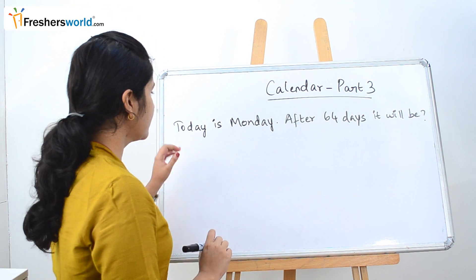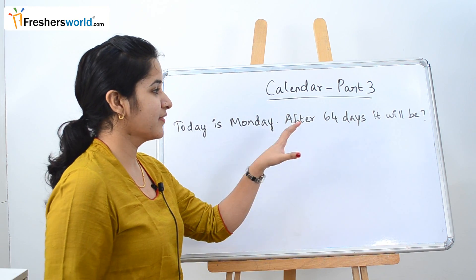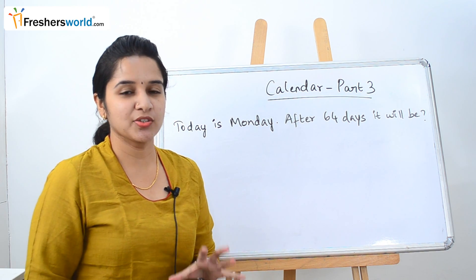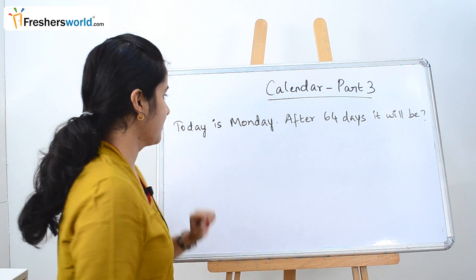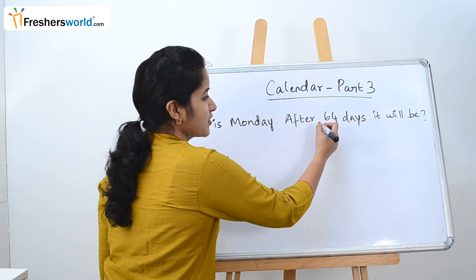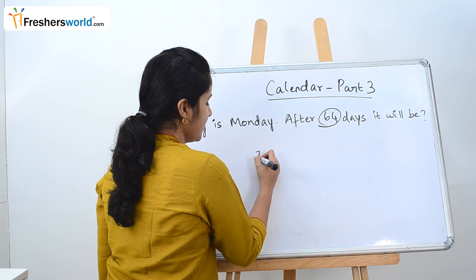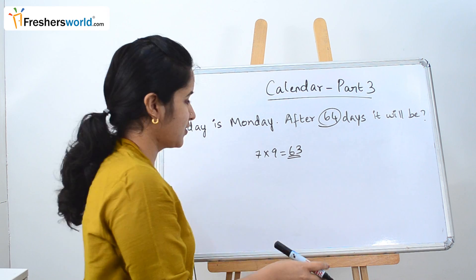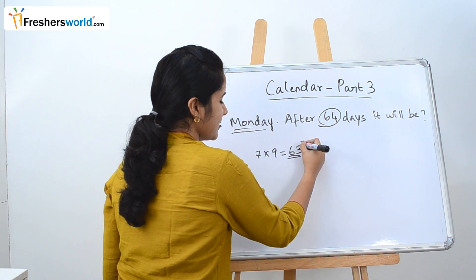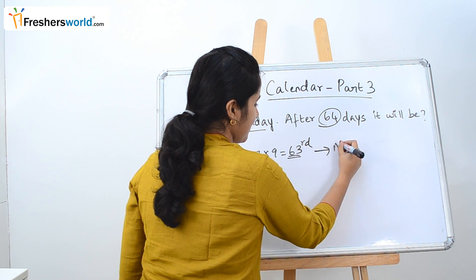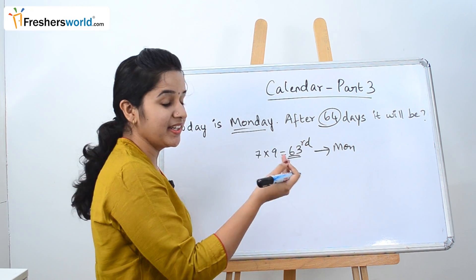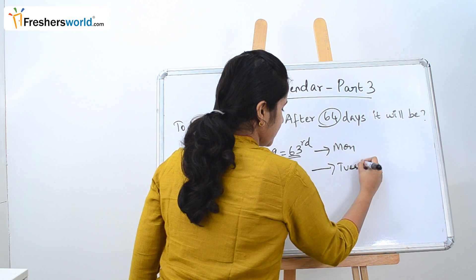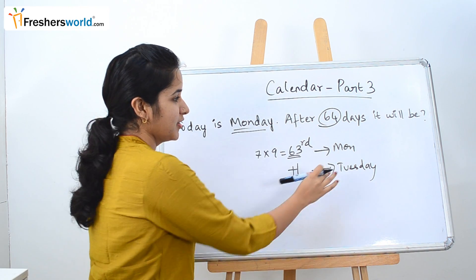The next question: today is Monday; after 64 days what day would it be? In a week there are 7 days, so we take the multiple of 7 closest to 64. We know 7 nines are 63, so after 63 days it will again be Monday. Therefore the 64th day is one day added, which is Tuesday.